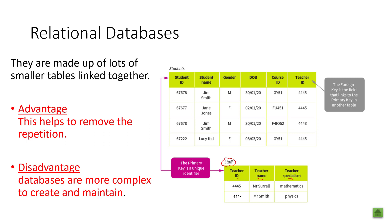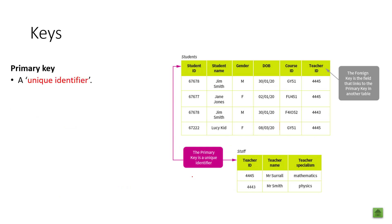Now let's look at the keys involved. We have a primary key, a foreign key, and a composite key. The student ID is a primary key — it is unique to the person. Jim Smith will have no other ID than 67678, Lucy will always have 67222, and Jane will always have 67677. Each teacher also has a unique primary key — Mr. Surrell has teacher ID 4445 and Mr. Smith has teacher ID 4443. These unique identifiers don't change, meaning we don't have duplicated data.